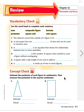Number 5, a square with a side length of one unit is called what? And the key here is it's a unit and it's a square. So it's a unit square.